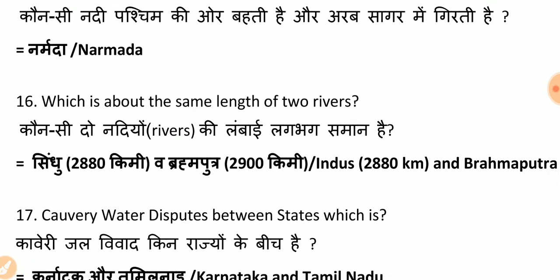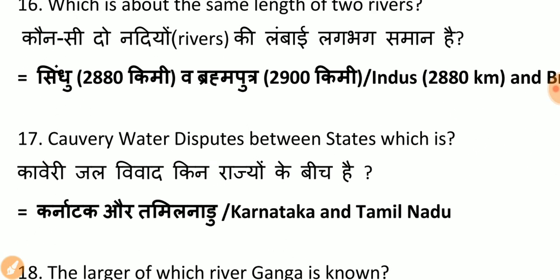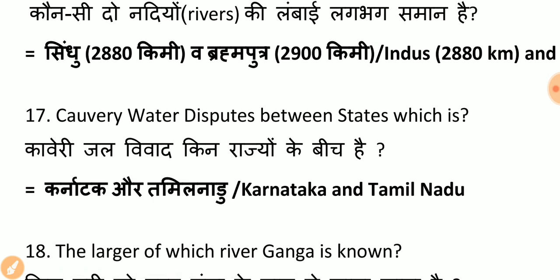Which two rivers have approximately the same length? Regarding the Sindhu (Indus) river, its length is 2880 km.